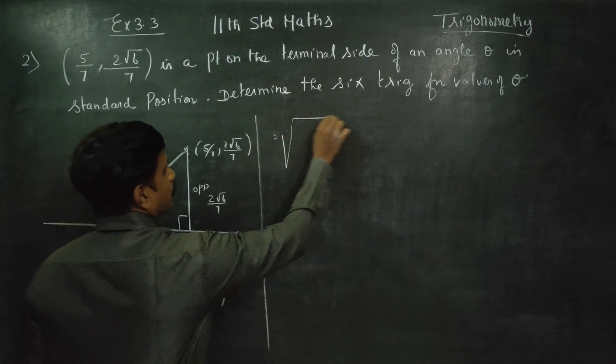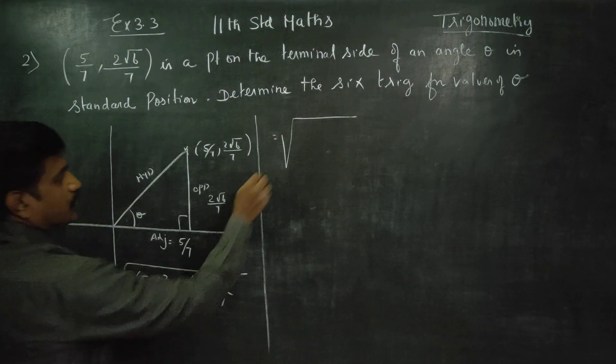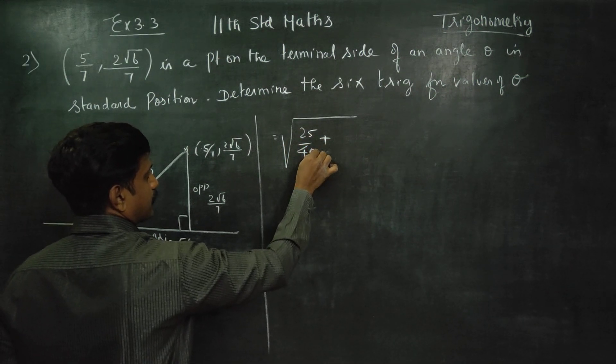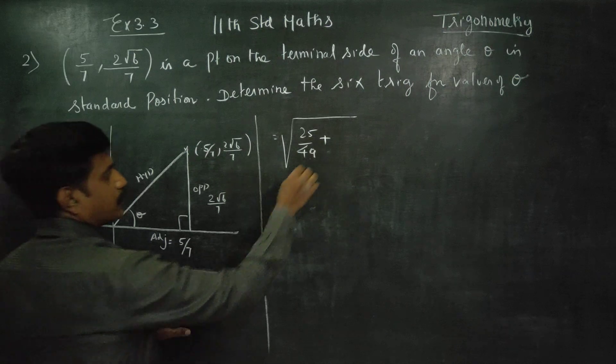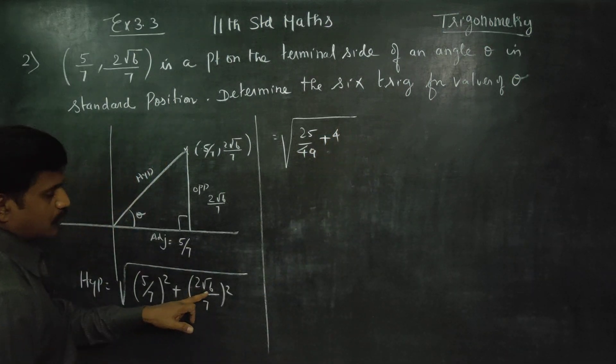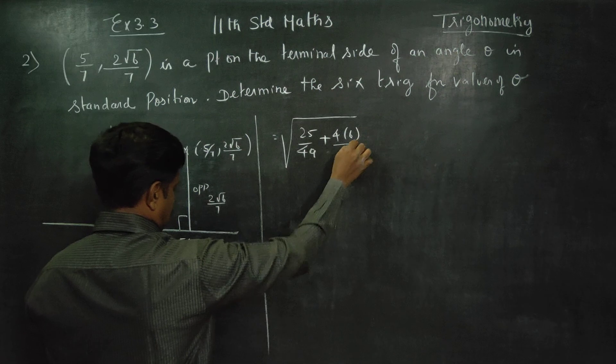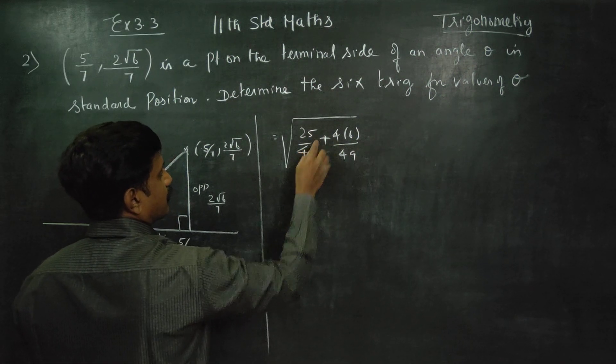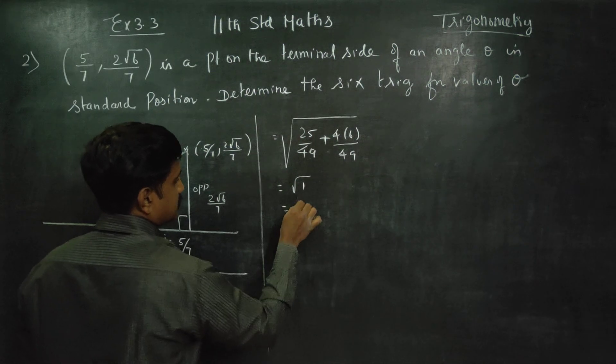Hypotenuse equals: 5 square is 25 by 49, 2 square is 4, root 6 square is 6, so 4 times 6 is 24 by 49. That is 25 plus 24 equals 49 by 49. Root of 1. Answer is 1.